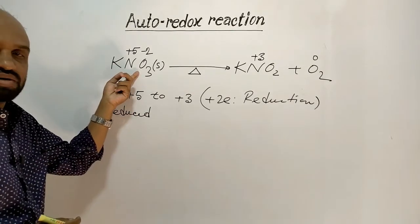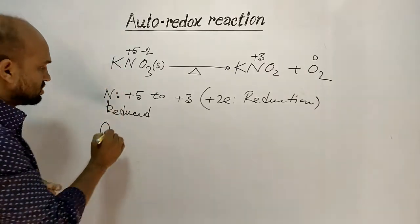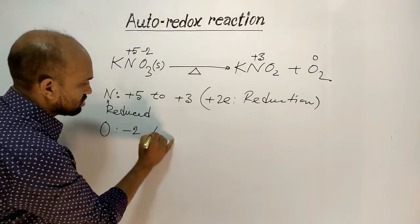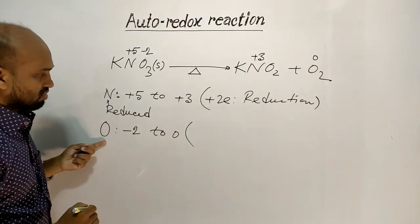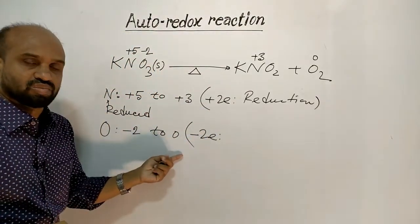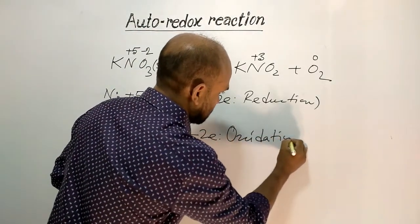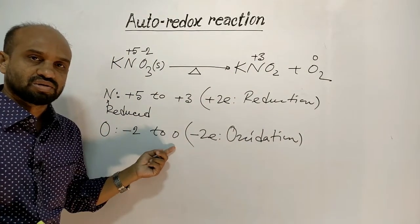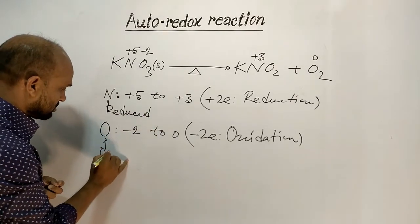Now let's see about the oxygen. Another element of the reactant molecule, oxygen, has its oxidation number changed from -2 to 0. That means oxygen donated two electrons, and donation of electrons means oxidation. So here oxygen after donating electrons is oxidized.